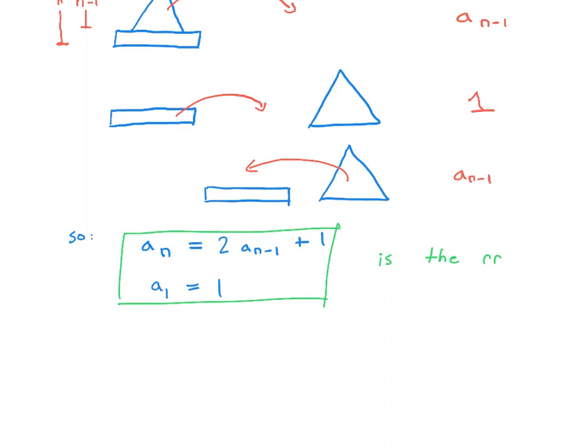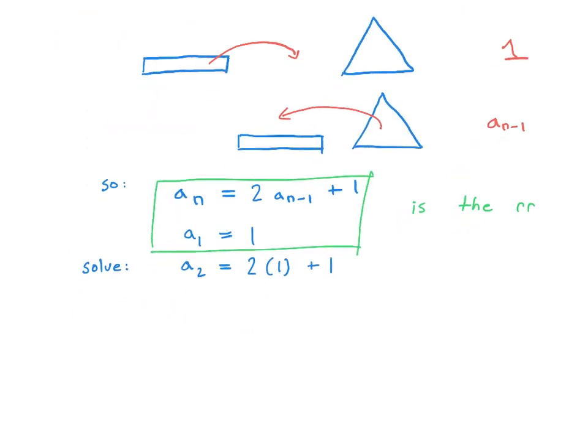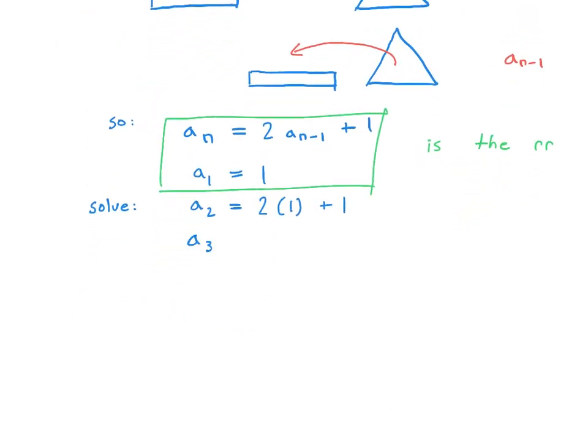So now we're going to solve our recurrence relation. And we're going to use the method of iteration. So a_2, that would equal the term that we had before, which is one multiplied by two. So two times one plus one. Okay, now a_3, that would be everything we had before multiplied by two. So we'd have 2^2 plus 2 times 1, which is two, plus one at the end.